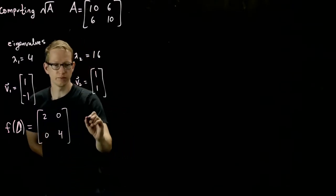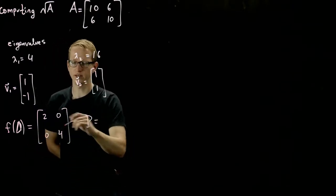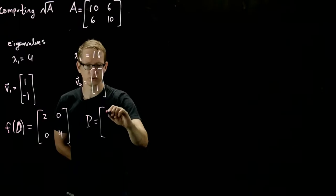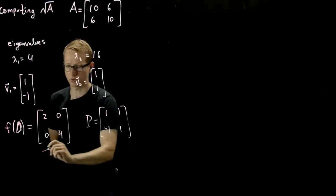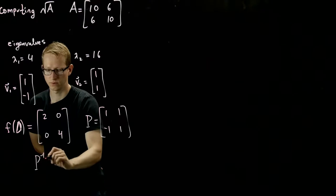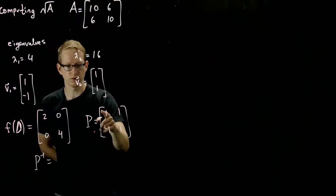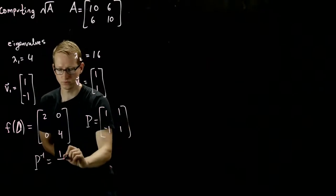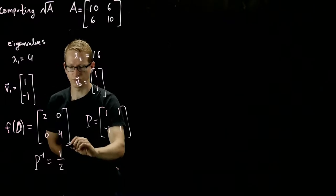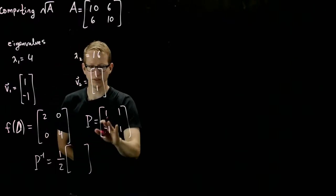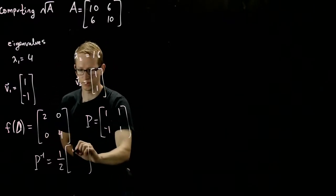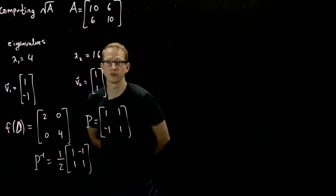And the matrix P is writing down these two eigenvectors, so it's just 1, negative 1, 1, 1. Its corresponding inverse is, the determinant here is 2, so it's 1 half, and then the rest of this matrix we swap and we negate. So that's the corresponding inverse of this matrix.